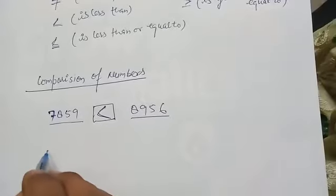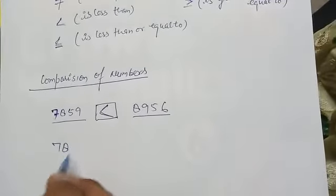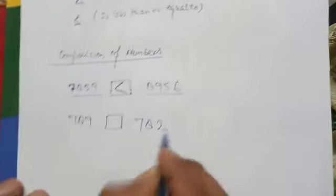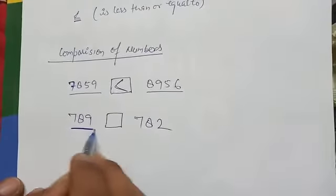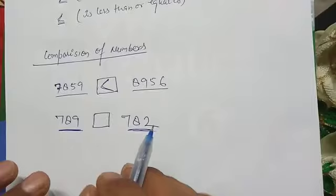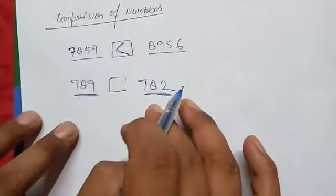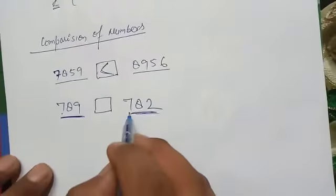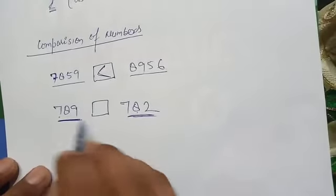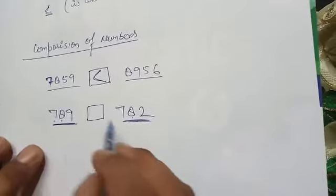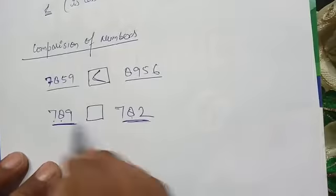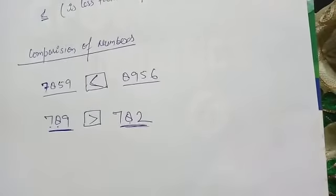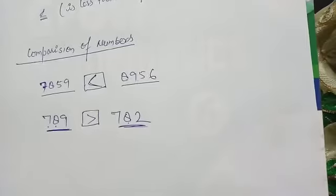Another example: here is 7, 8, 9 and here is 7, 8, 2. Both have three digits, so digits are the same. We compare one by one: here is 7 and here is also 7; here is 8 and here is also 8. Now the third digit — here is 9 and here is 2. So 789 is greater than 782.